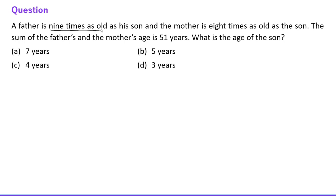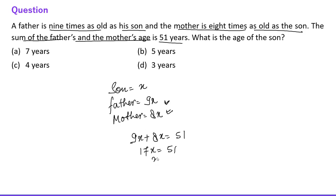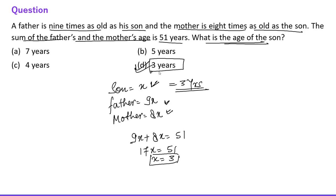Next question: A father is 9 times as old as his son and the mother is 8 times as old as the son. Assume the son's age is x; father is 9x and mother is 8x. The sum of father's and mother's age is 51 years: 9x + 8x = 51, so 17x = 51, giving x = 3. The age of the son is 3 years.